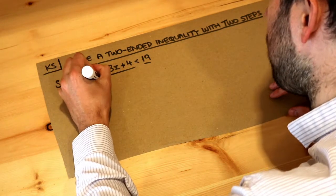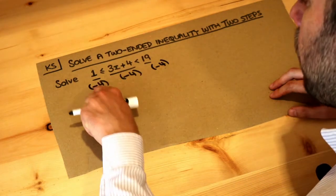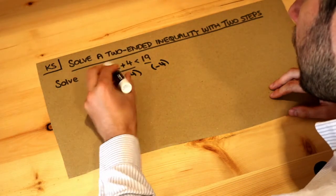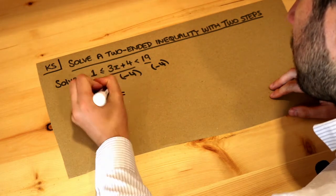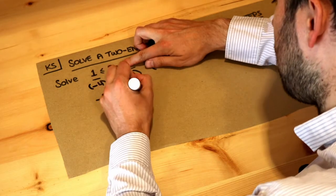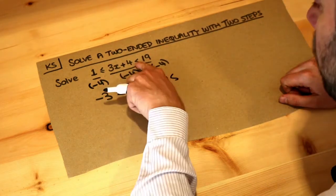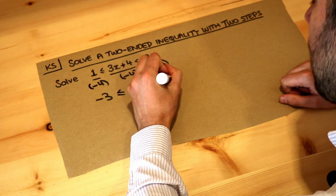We subtract 4 from the left the middle and the right so 1 minus 4 is negative 3, copy that less than or equal to symbol, subtracting 4 from this middle bit gets rid of the plus 4 leaving 3x and then 19 minus 4 is 15 and copy that symbol that's just less than.